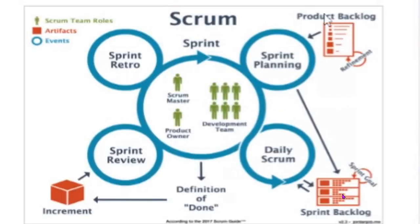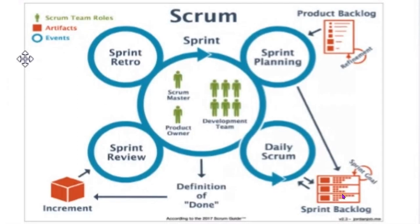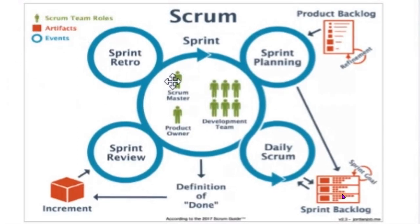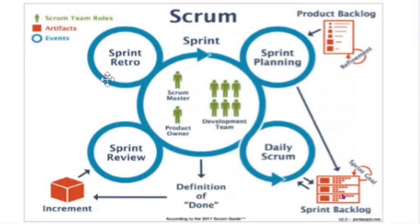We have it all here. The Scrum chain rules are highlighted in green. We have the artifacts in red: the Product Backlog, Sprint Backlog, and the Increment — Sprint Review must bring about an increment. Then we have the major events in blue, each of which I just explained.